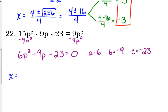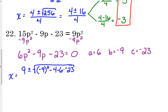Applying the formula: x equals — change the sign of b, it was negative so it becomes positive 9 — plus or minus the square root of negative 9 squared minus 4 times a times c, all over 2 times a. You do need to memorize this formula because it is not given to you on the final exam, quizzes, or tests.